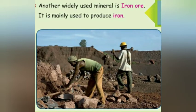Another widely used mineral is iron ore, which is mainly used to produce iron. Iron ore is found at Kanja Malai in Tamil Nadu. Iron is used to make vehicles, engines, railway tracks, ships, buildings, furniture, paper clips, tools, bicycles, and thousands of other items.